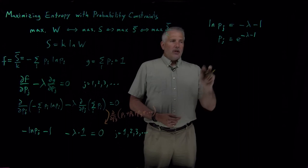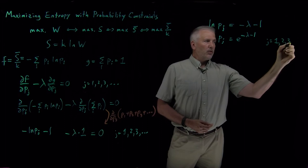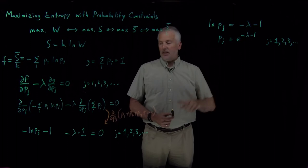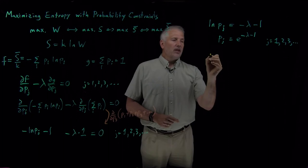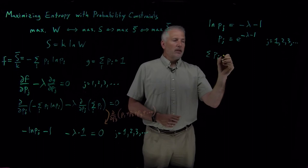So far so good. Each one of these individual states, number 1 or 2 or 3 or so on, has a probability equal to e to the minus lambda minus 1. Lambda is this Lagrange multiplier that we don't need to know the value of, because the constraint tells us when I add up all of the P sub i's, P1, P2, P3, and so on, I should get 1. The probabilities have to add up to 1.